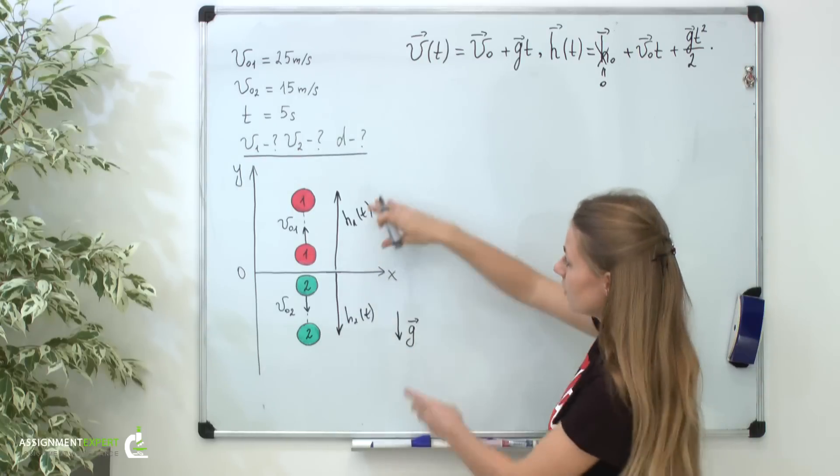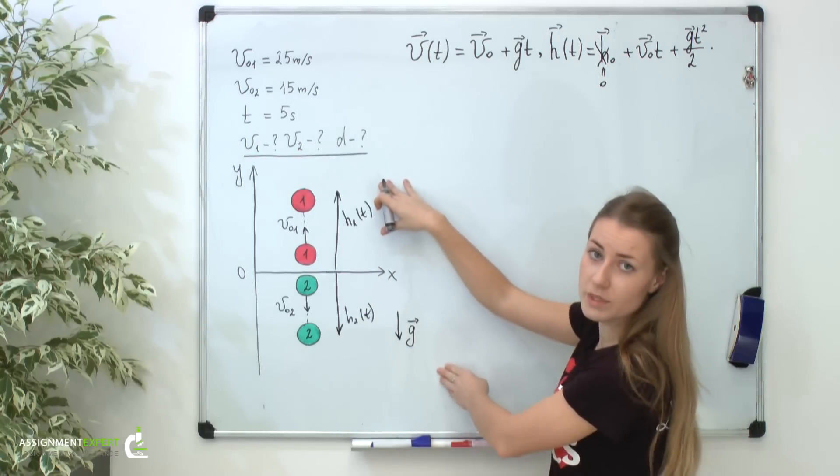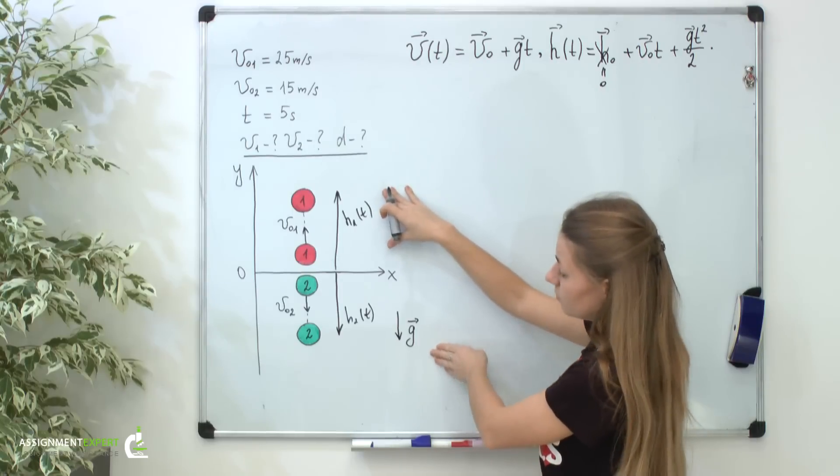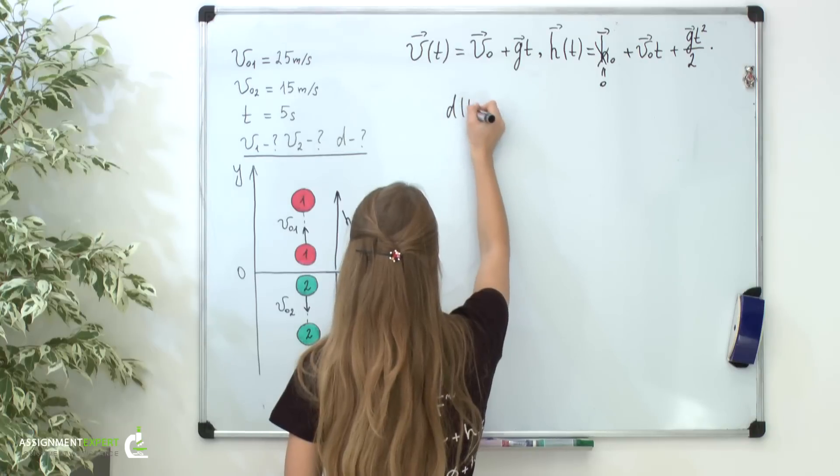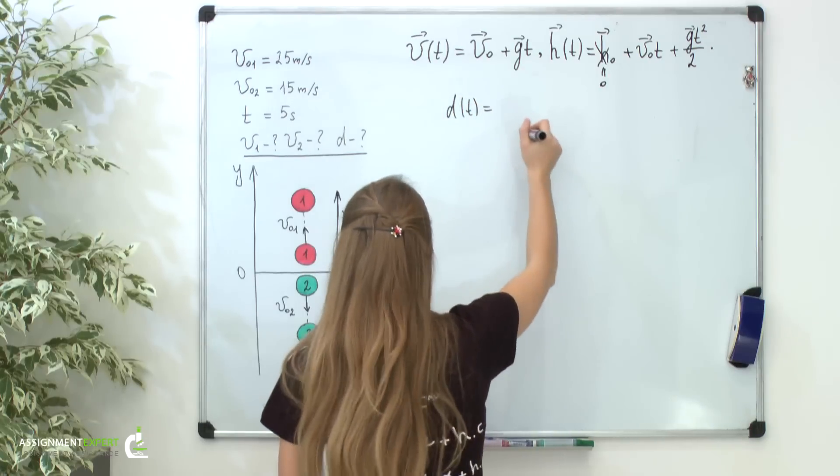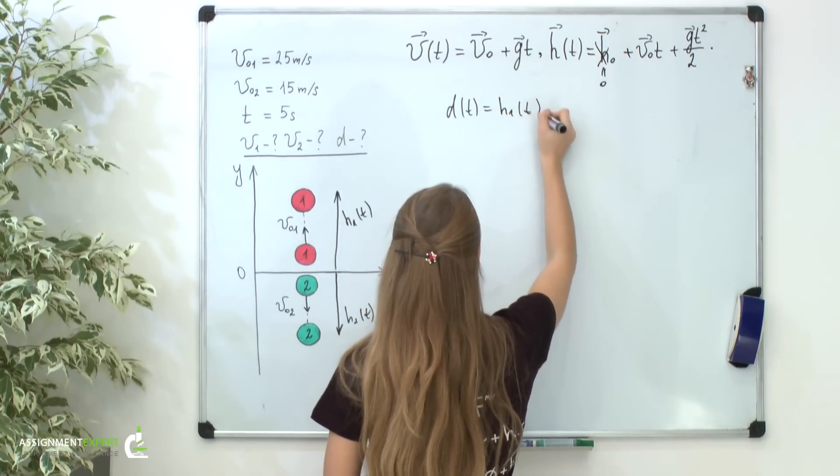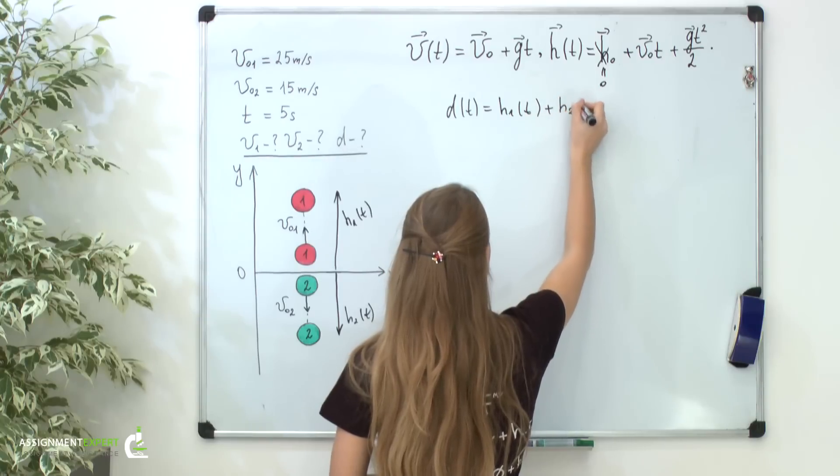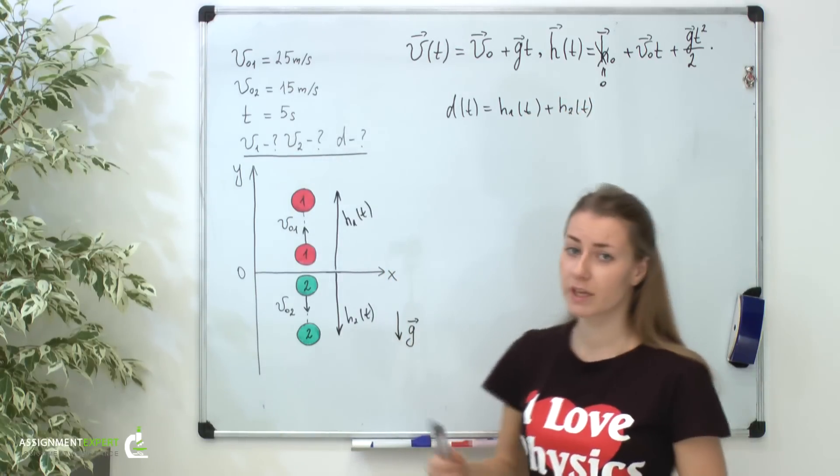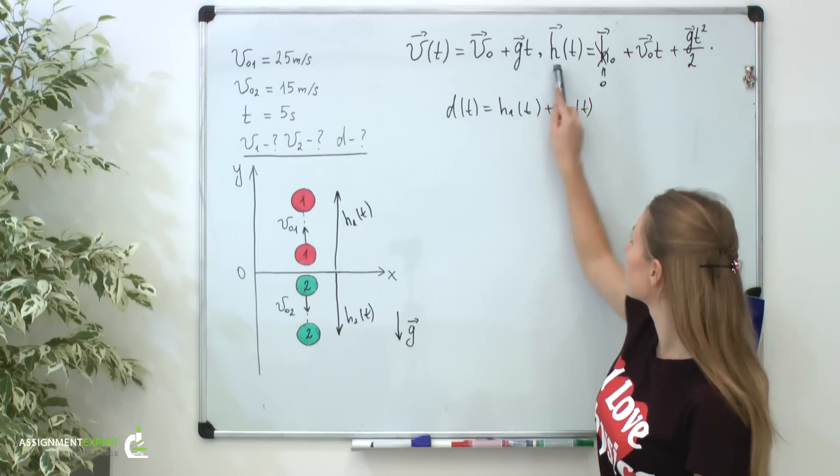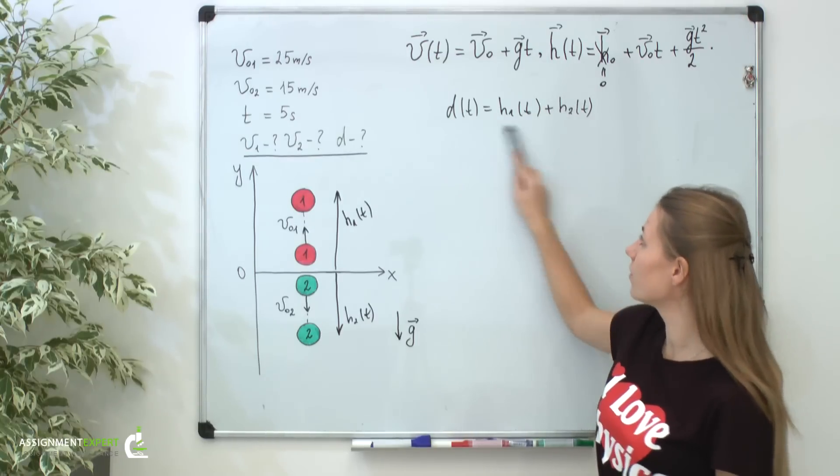So, it's easy to understand that the distance between these two balls will be simply a sum of these two distances. I will write it down: d of t equals h1 of t plus h2 of t. Now, it became clear what the second equation is for. It's simple to find this distance.